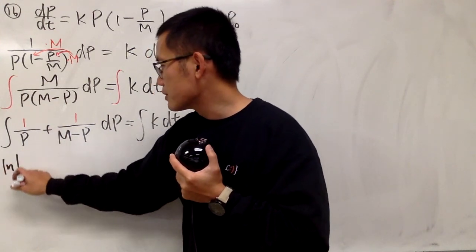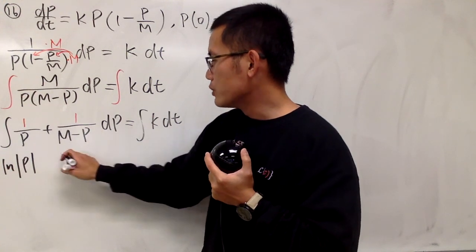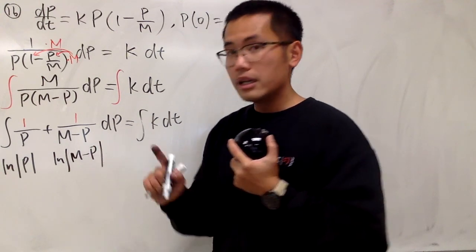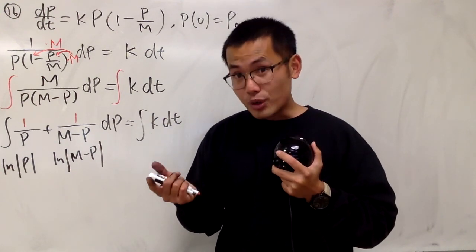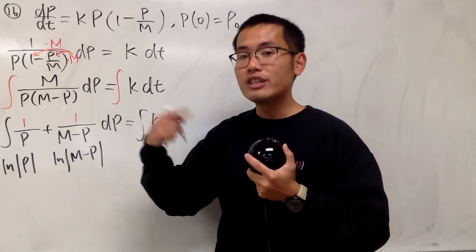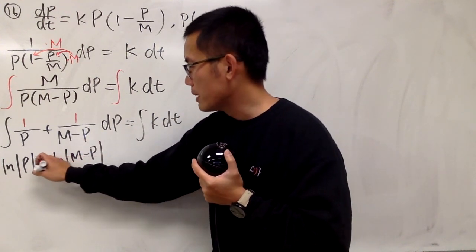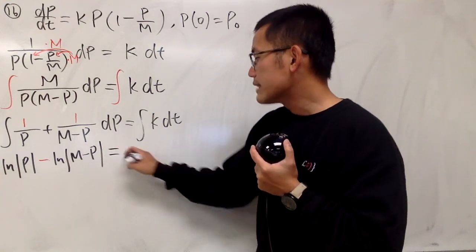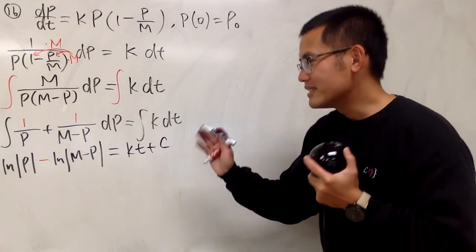The first part, we get ln absolute value of p. And then we have ln absolute value m minus p. But don't forget the chain rule. The derivative of m minus p in the p world is negative 1. You have to divide it by negative 1, so it becomes negative right there. And on the right-hand side, we have kt plus c. Seriously, we don't see any numbers right here. So this is the idea.